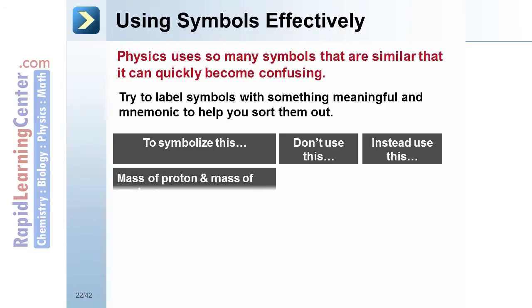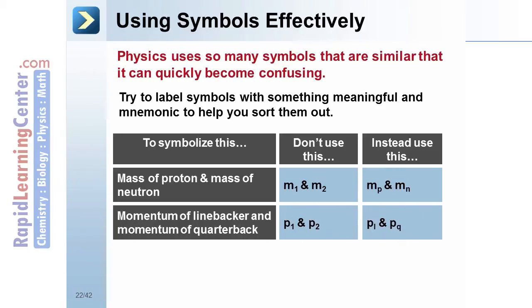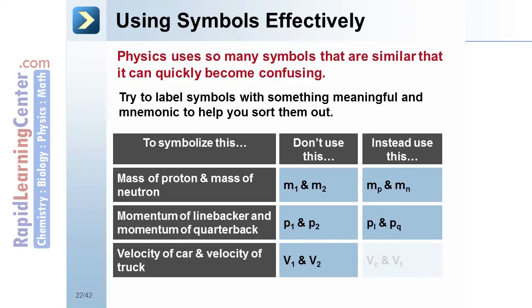For example, if you're writing the mass of a proton, instead of m1, make it m sub p for mass of a proton. If you want to represent the momentum of a linebacker, instead of p1, you could make it p sub l. The subscript l represents linebacker. And velocities of cars could be v sub c.